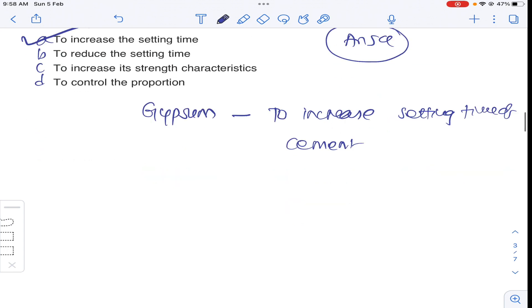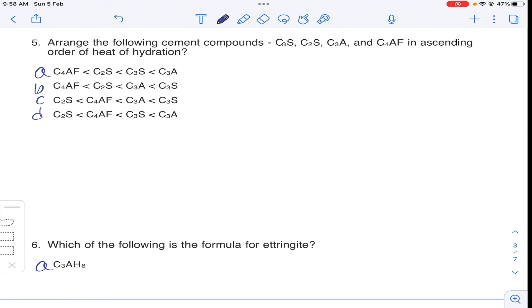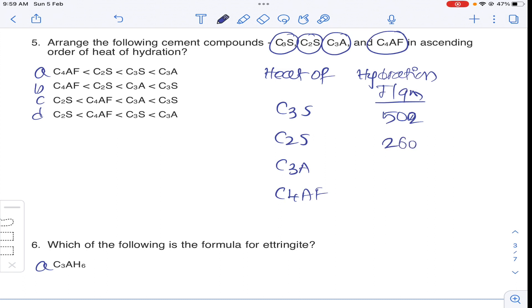Coming to question number 5, arrange the following cement compounds C3S, C2S, C3A, C4AF in ascending order of heat of hydration. So C3S liberates 502 Joule per gram. C2S liberates 260 Joule per gram. C3A liberates 867 Joule per gram. And C4AF liberates 419.